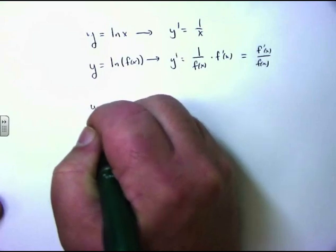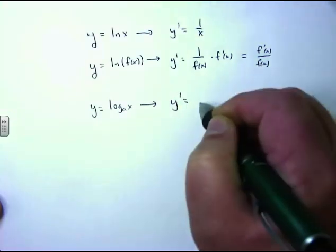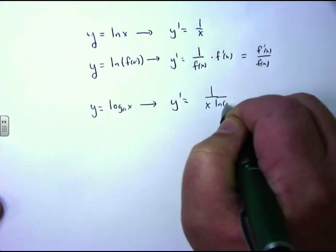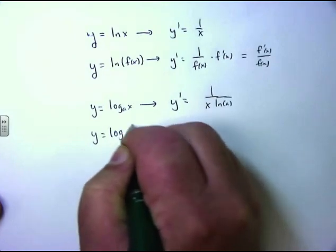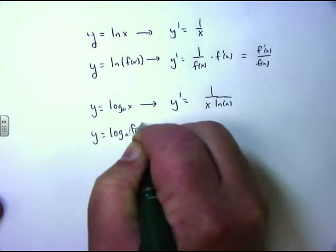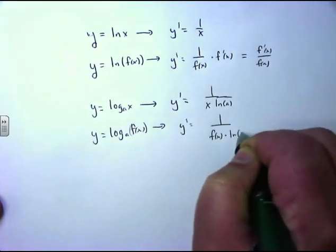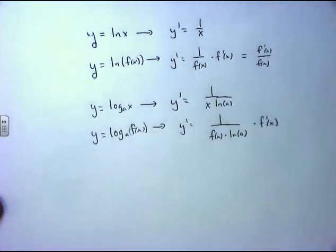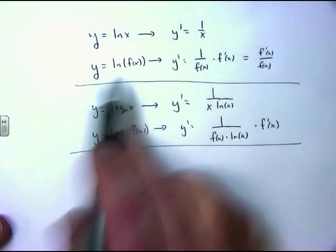If you have y equals log base a of x, we have memorized that the derivative is 1 over x times the natural log of a in the denominator. But if you have the chain rule version — log base a of a function — then the derivative is 1 over the function times the natural log of a, times the derivative of the inside, f′(x). So for every rule in this chapter, you get the rule and you get the chain rule version of it.